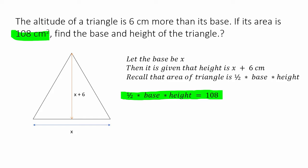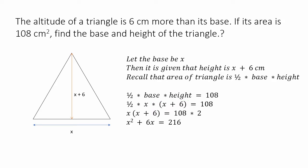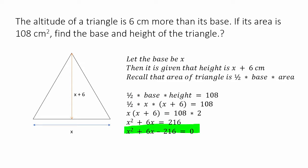So let us substitute for base and height. Base is x and height is x plus six. If we take the half to the other side, it becomes 108 times 2, which is 216. On the left-hand side, x times x plus six is x squared plus 6x.